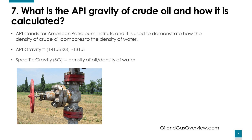What's the API gravity of crude oil and how is it calculated? API stands for American Petroleum Institute, and it's used to demonstrate how the density of crude oil compares to the density of water. It can be calculated using a specific equation.